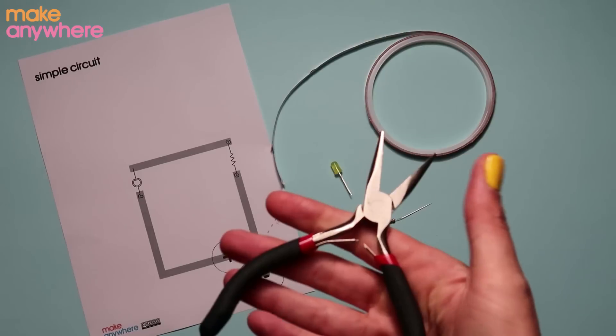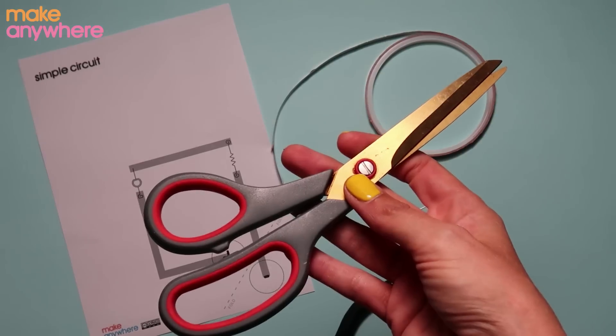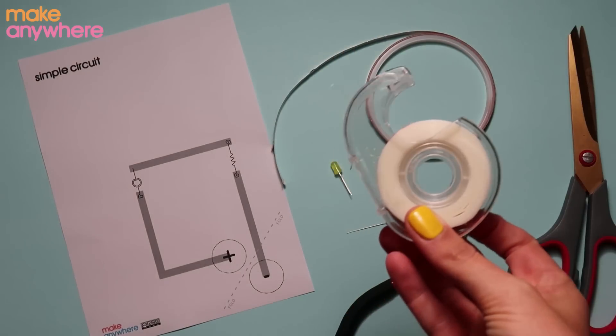A resistor, you'll need some pliers to twist the legs of your resistor and your LED, some scissors and some clear sellotape.